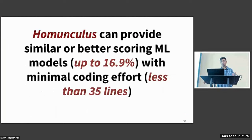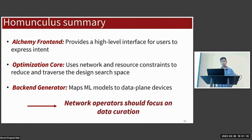In summary, Homunculus is built from three different parts: the Alchemy frontend which provides a high-level interface for users to express their intent, the optimization core which uses network and resource constraints to reduce and traverse the design search space, and finally the backend generator which maps ML models to data plane devices. The last takeaway here is that with Homunculus abstracting away so much of the model building process, the operator is now primarily responsible for the data of their algorithms rather than needing to focus on designing hand-tuned algorithms.